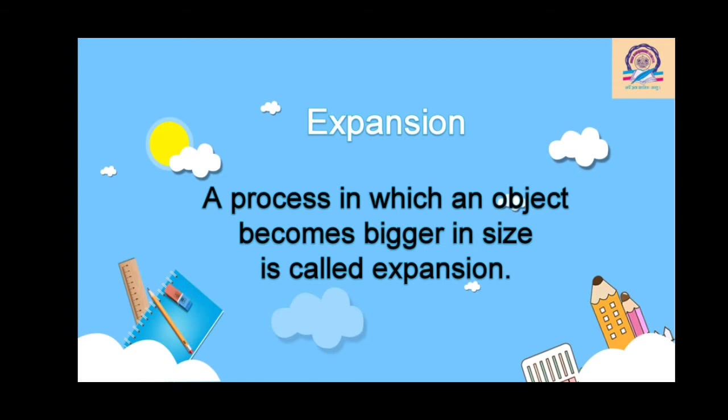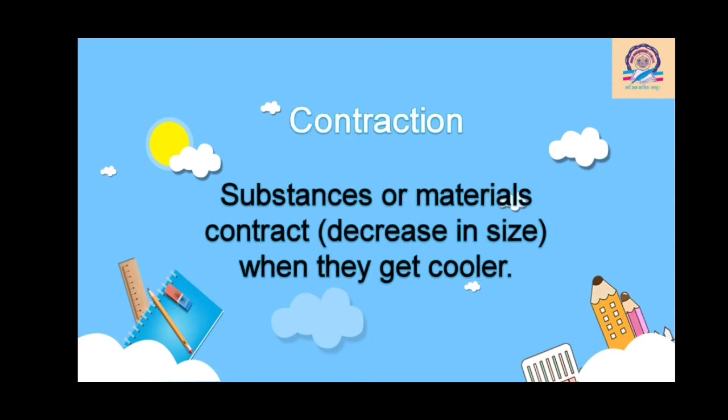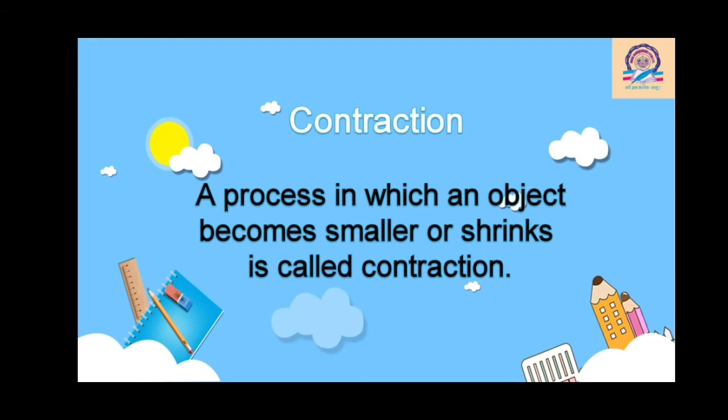So what will be contraction? It is exactly opposite. Contraction is when a substance or material contracts — that means it decreases in size when it gets cooler. When a substance or material gets cooled, it contracts, and that is nothing but contraction. In simple words, a process in which an object, material, or substance becomes smaller or shrinks is called contraction.